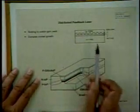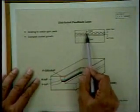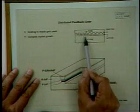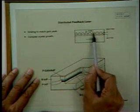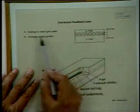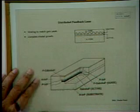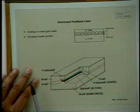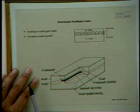The other more complex structures: this is a distributed feedback laser. You can notice here's the P-type, N-type, active region, and the grating. The grating is designed to match the peak gain.